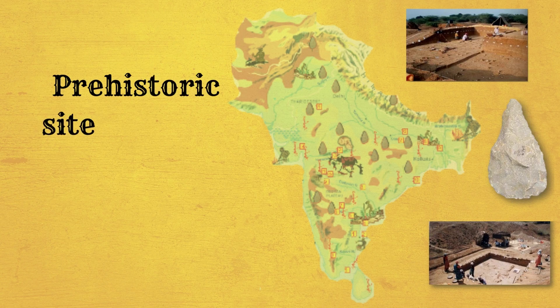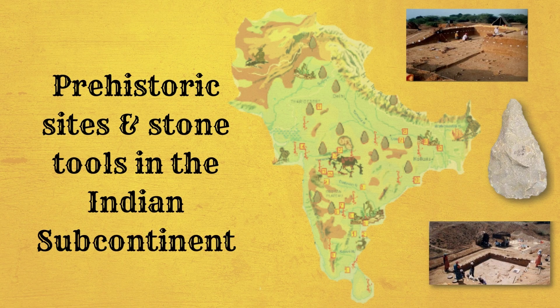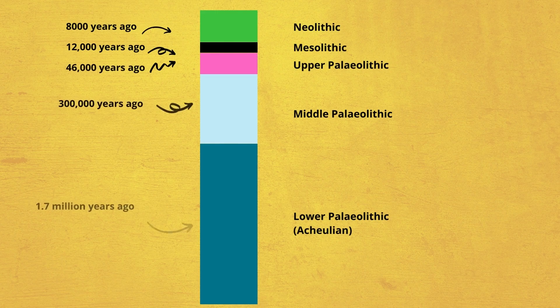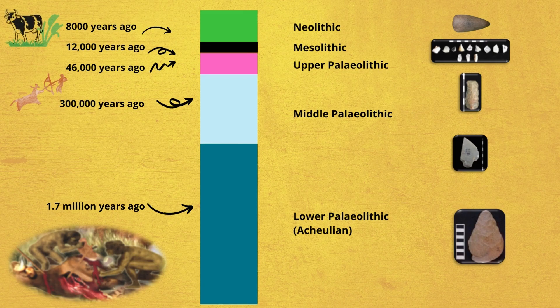Prehistoric sites are found all over India. Do you know of any sites near where you live? Archaeologists classify prehistory into many different cultural phases, often with different species, who had many types of tools. They also had interesting ways of life, ranging from hunting and gathering to farming crops and herding animals.